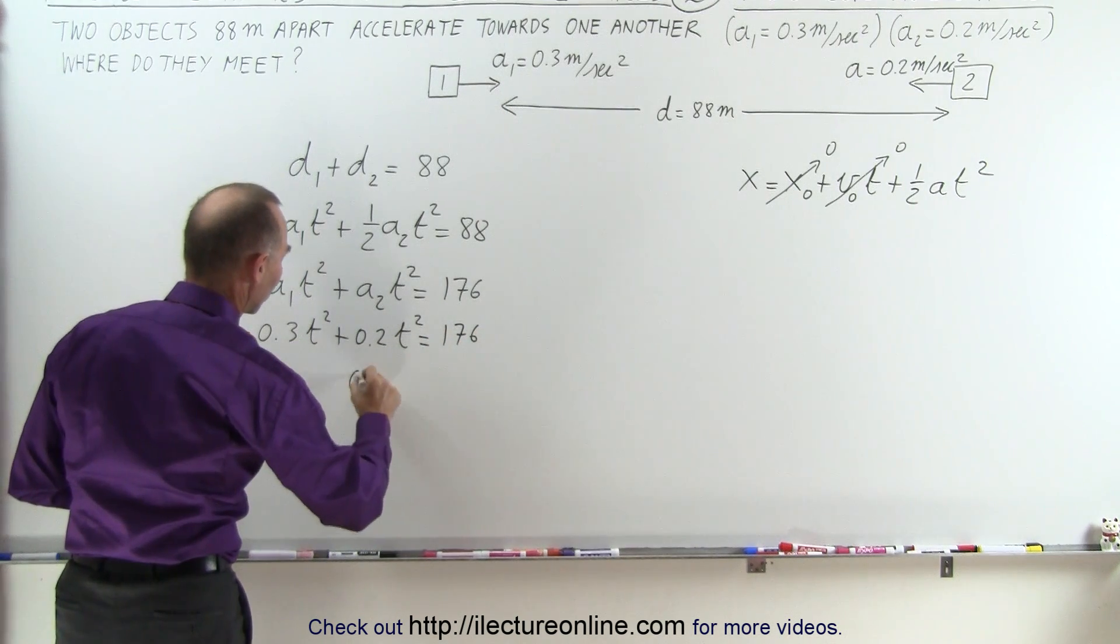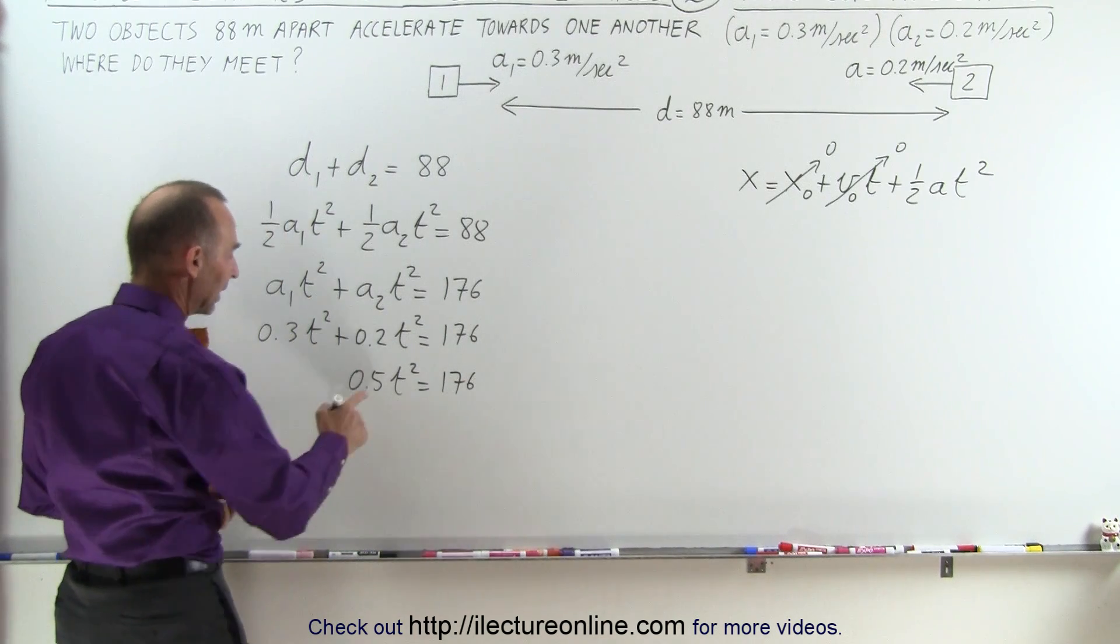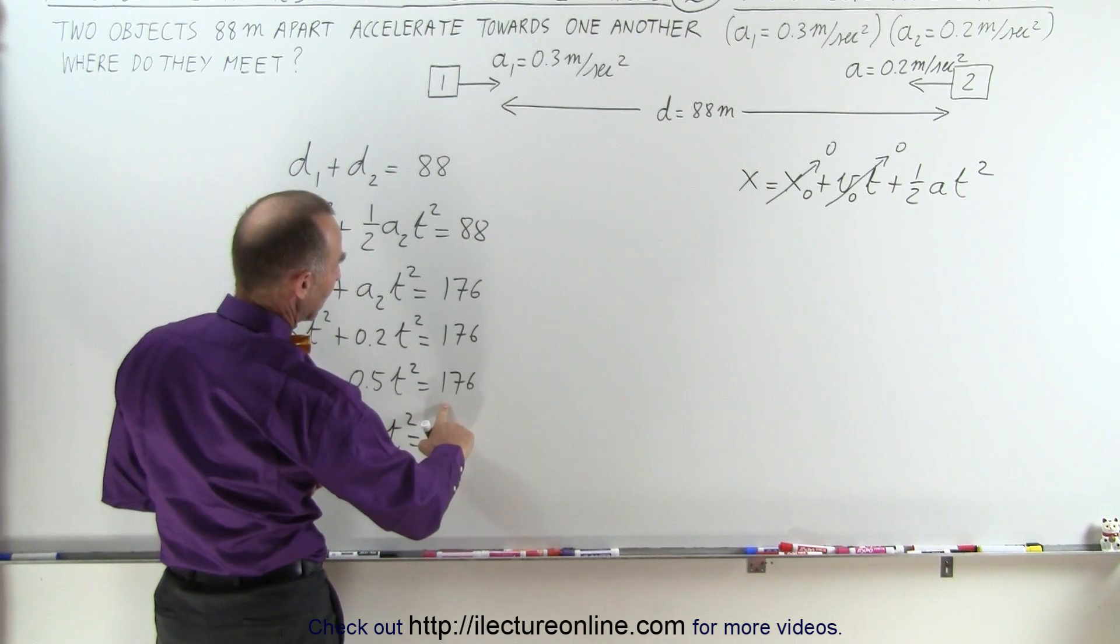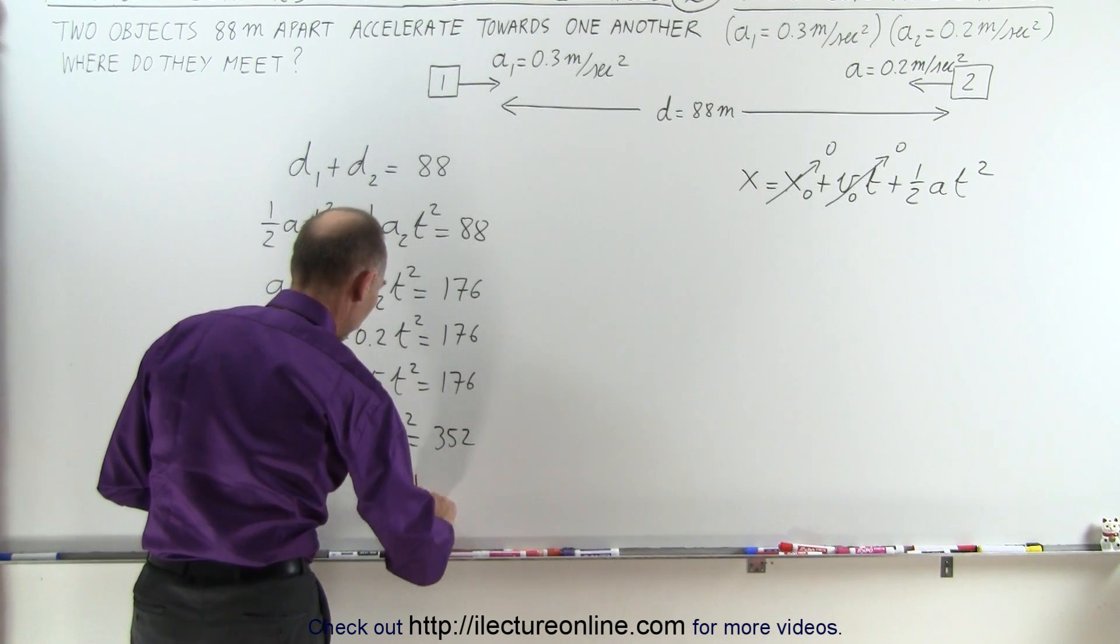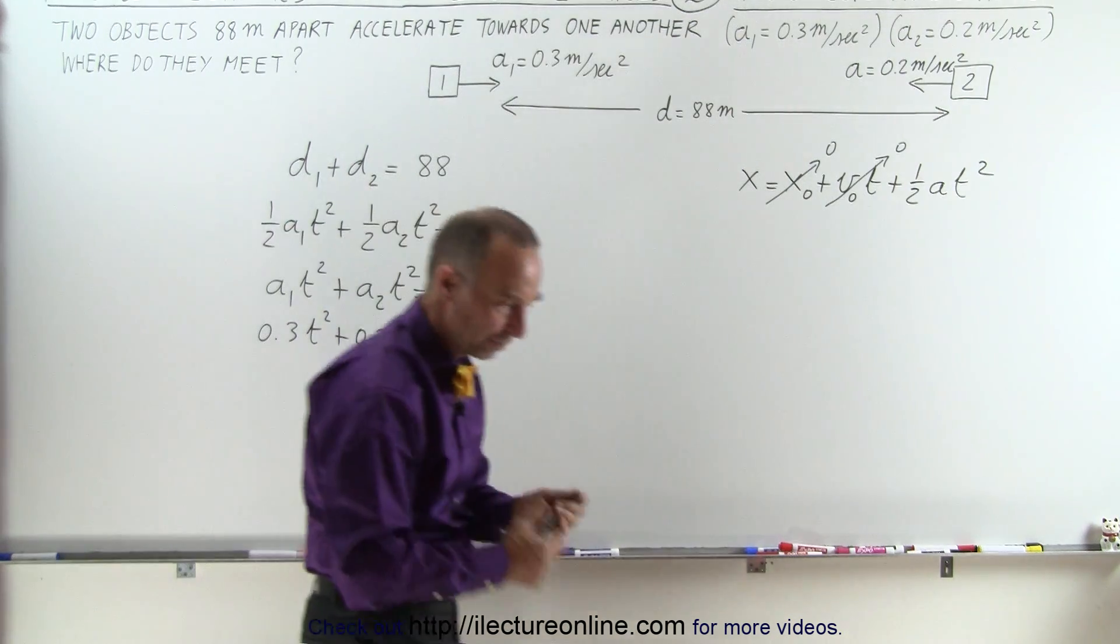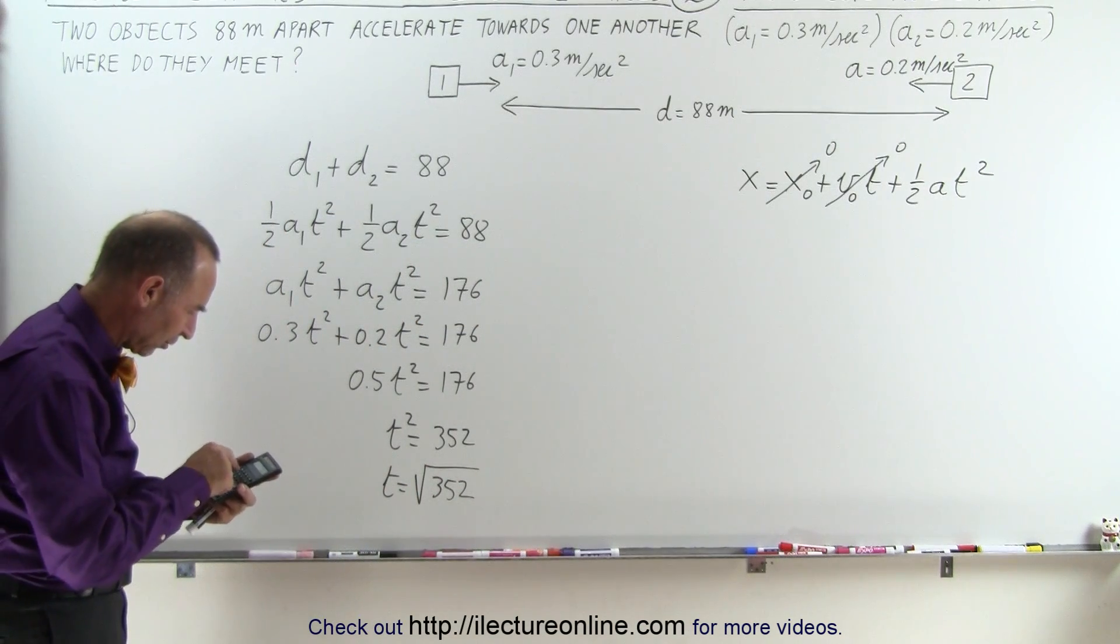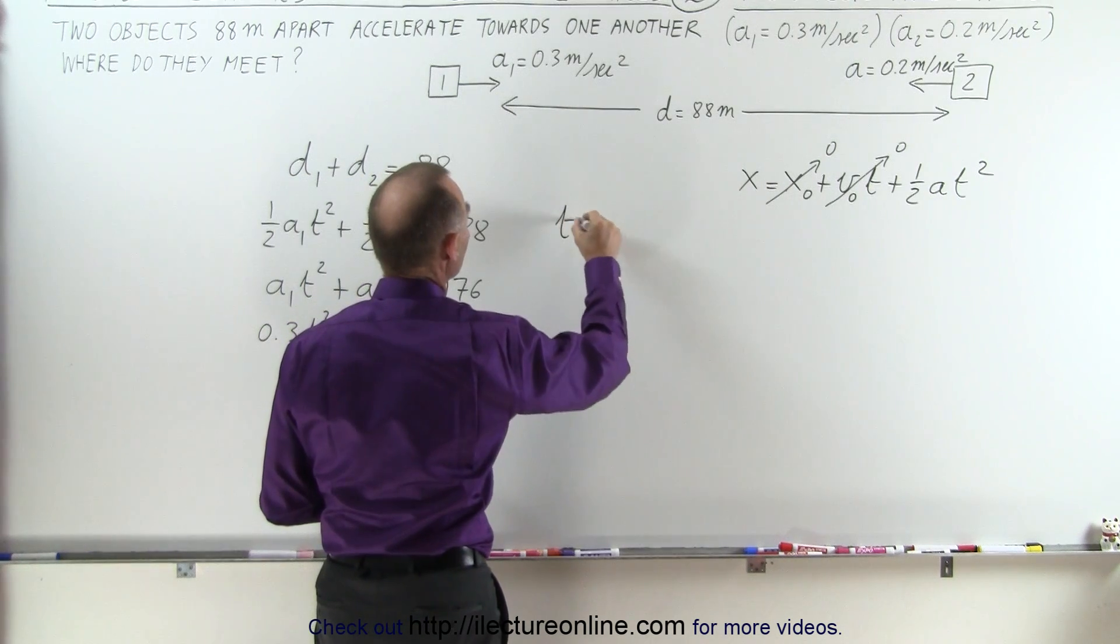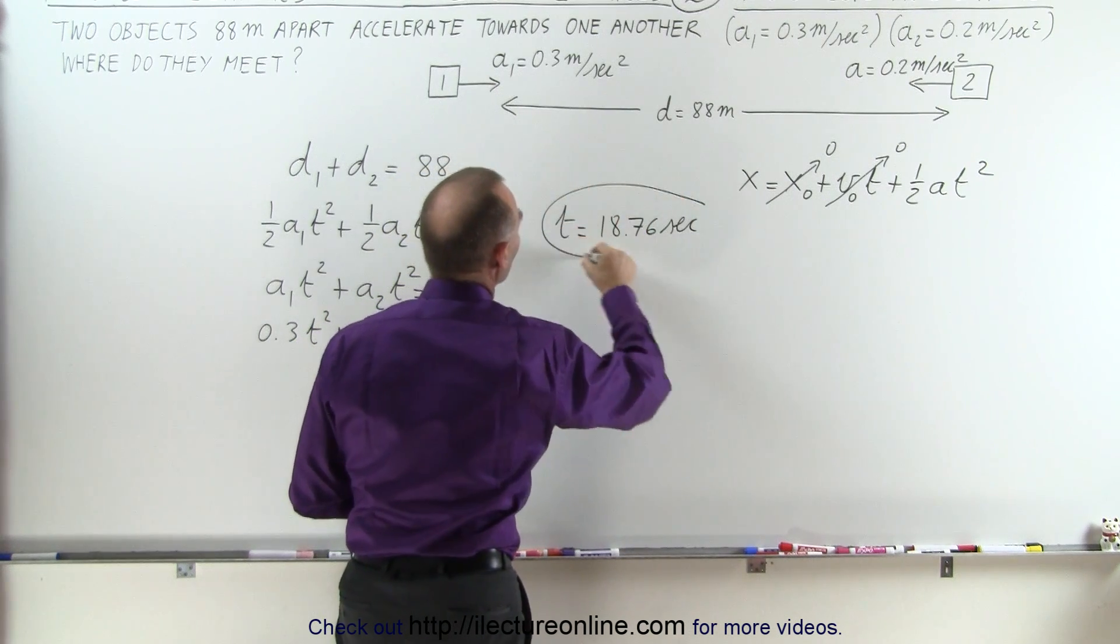Add these together, we have 0.5 t squared equals 176. Multiplying both sides by 2 again to get rid of the one-half gives us t squared equals 352. So t will be equal to the square root of 352. With the calculator, t equals 18.76 seconds. Now that we have the time, we can figure out the distance traveled by each of the two.